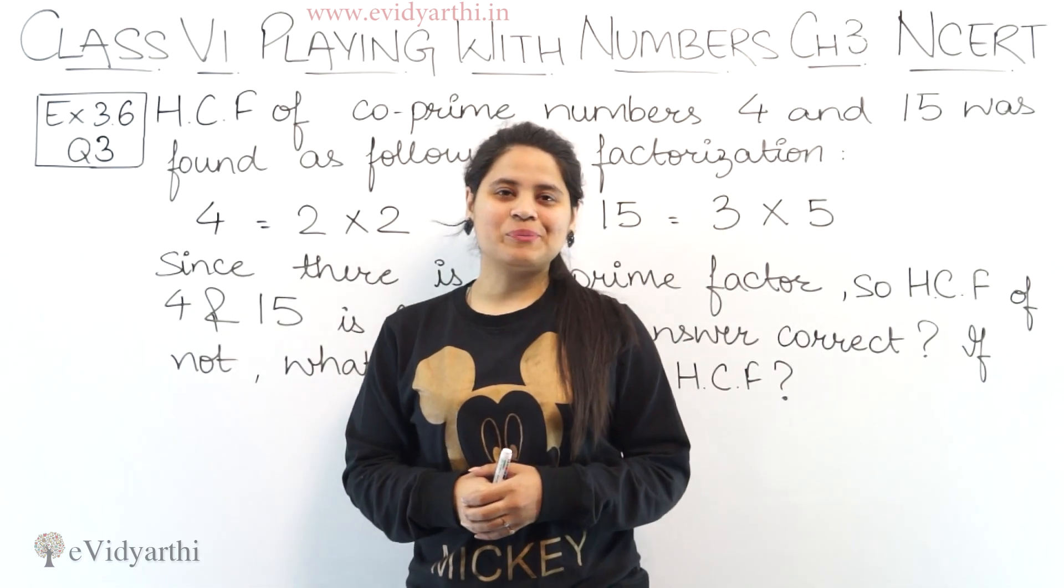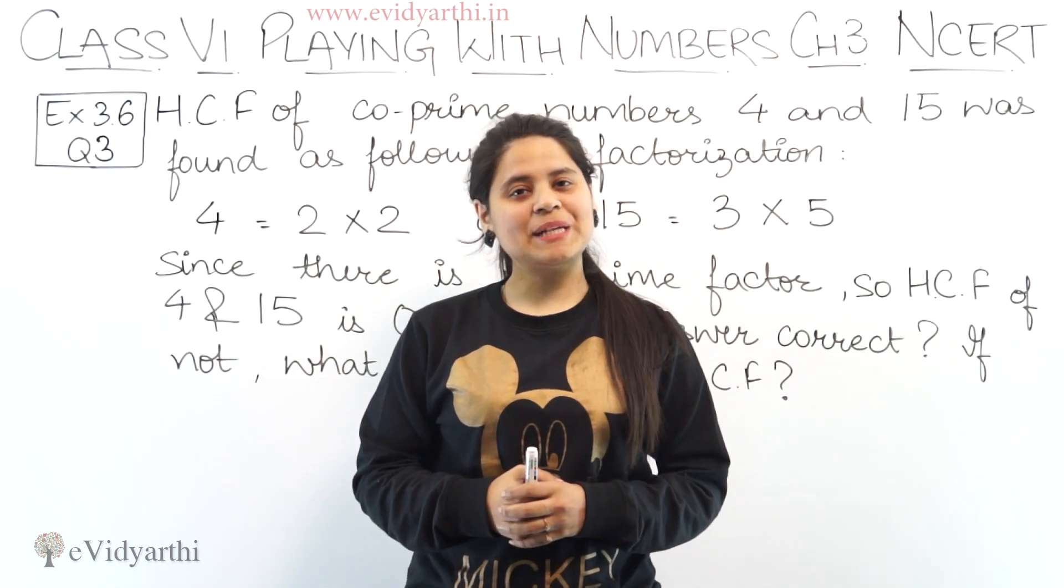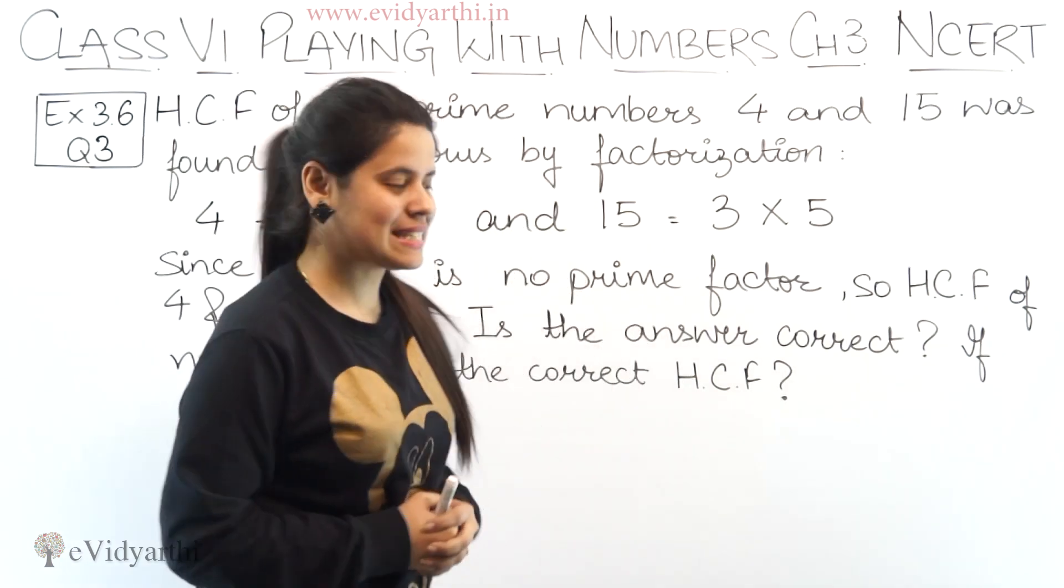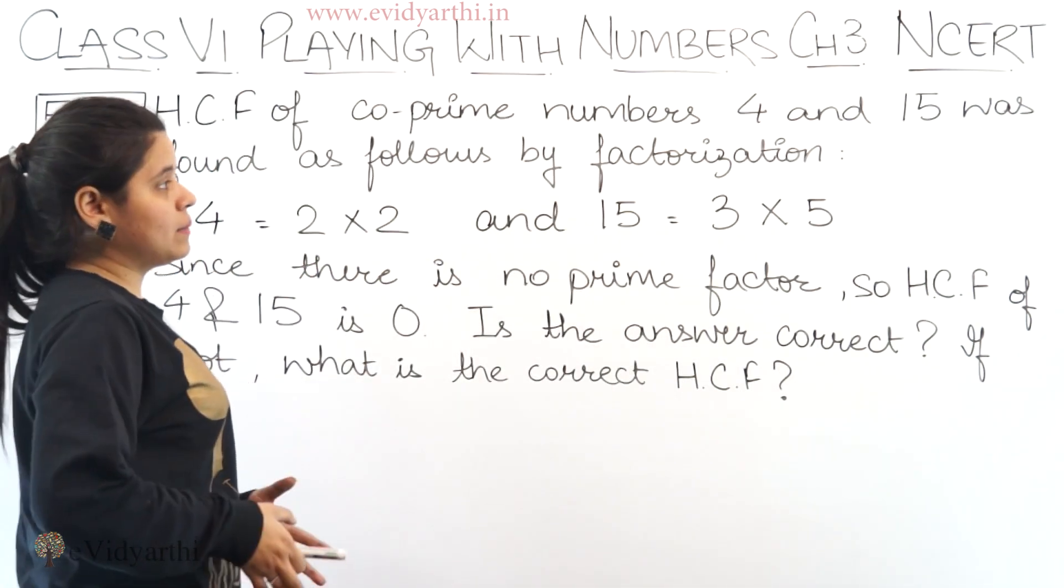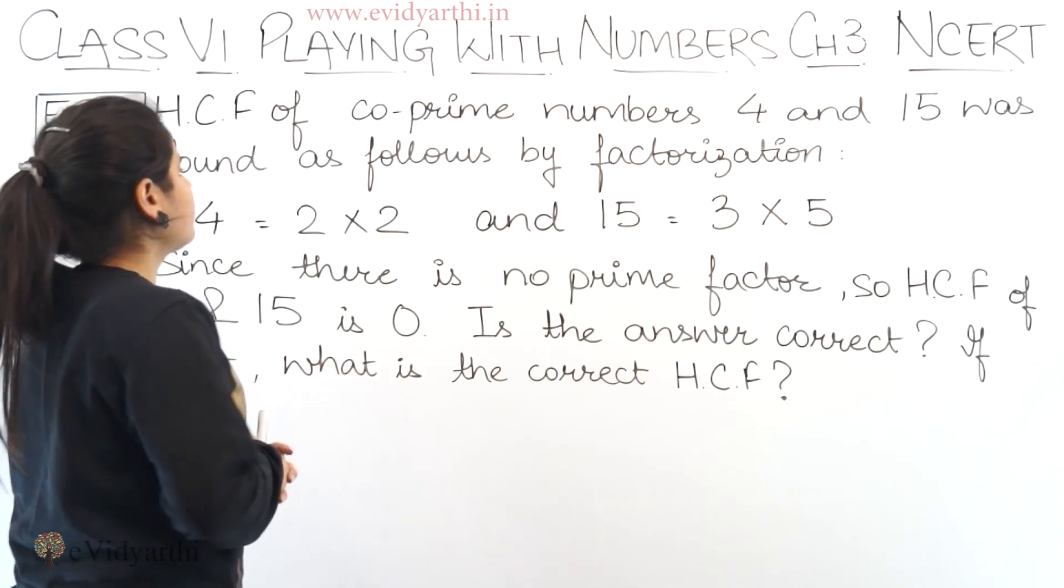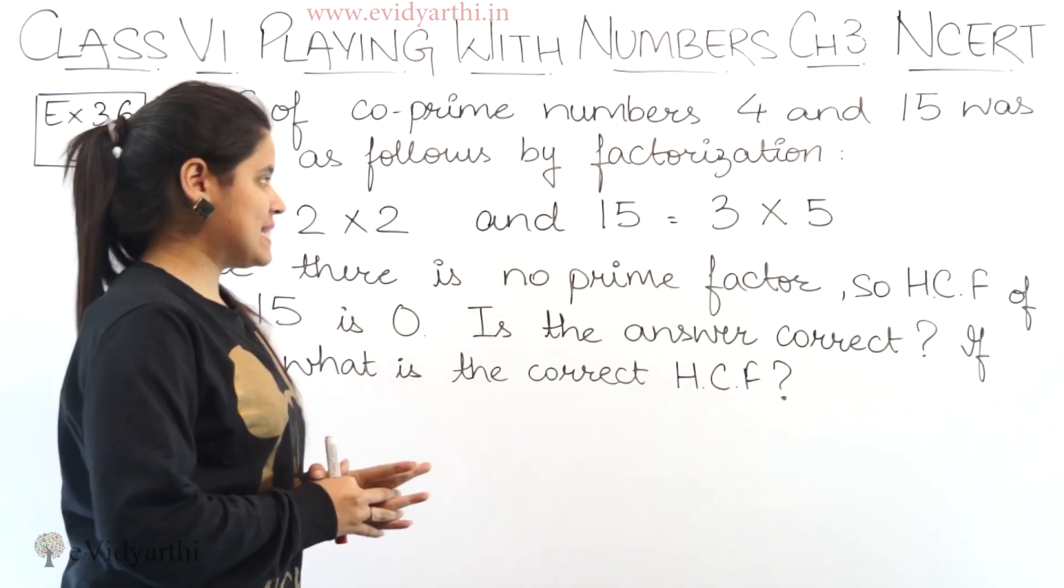Hello everyone, this is Mansi from Evidyarthi coming to question number 3, exercise 3.6. In this question we have HCF of co-prime numbers 4 and 15 was found as follows by factorization.